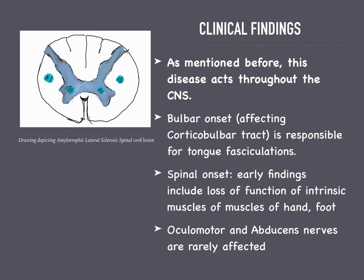It is hypothesized that the oculomotor and abducens nerves use their structure differently than other nerves, and they also use glutamate differently, which is why they are rarely affected.